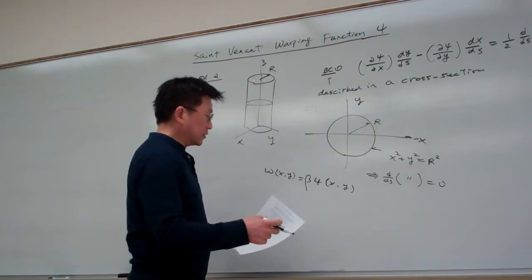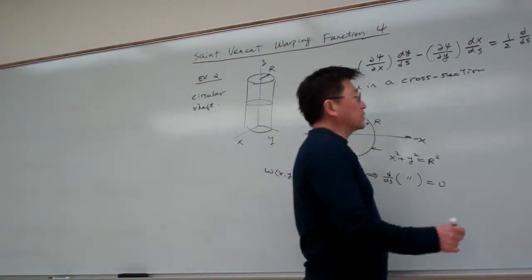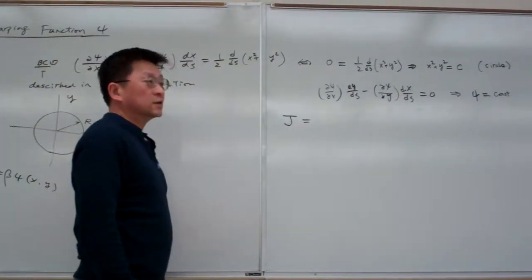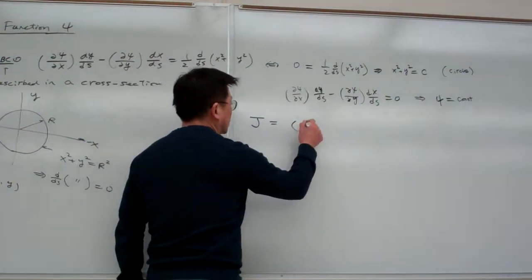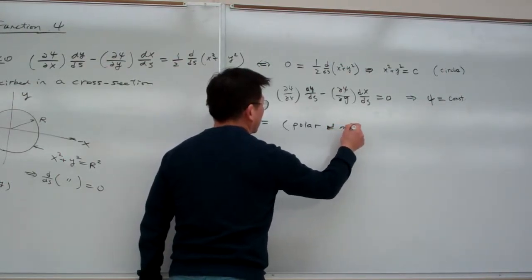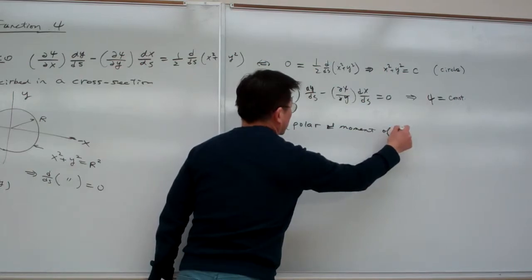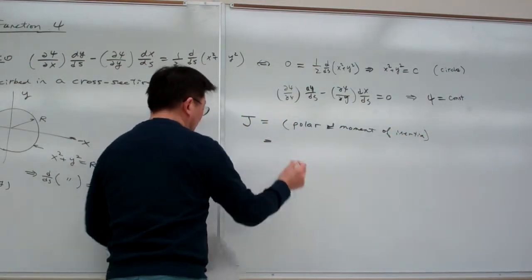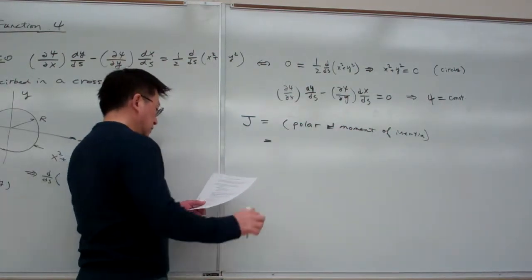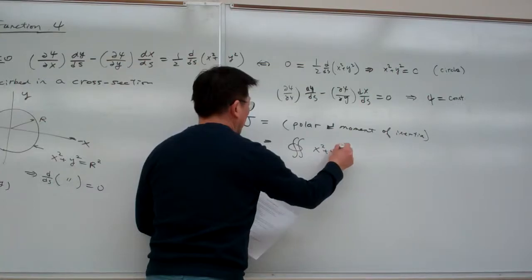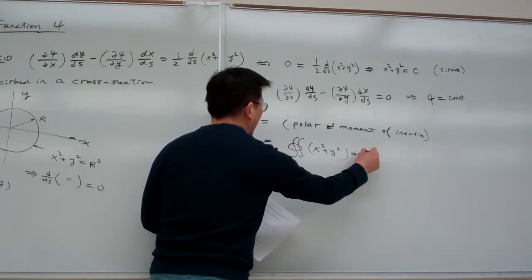Under these situations, we can proceed to calculate J, the polar moment of inertia. For this one, the calculation detail is the formula: integral of x squared plus y squared dx dy over the entire circular cross section.